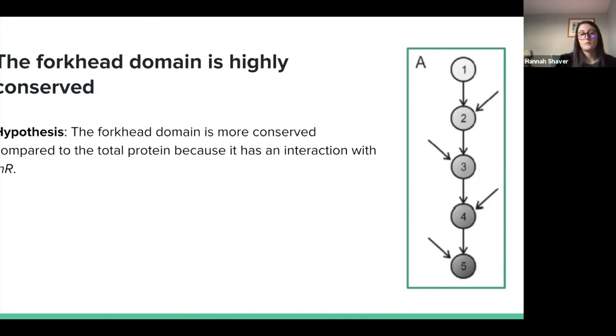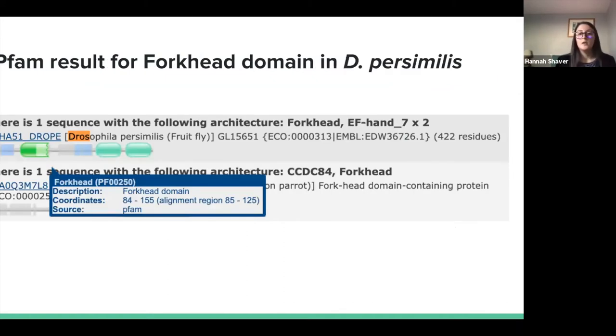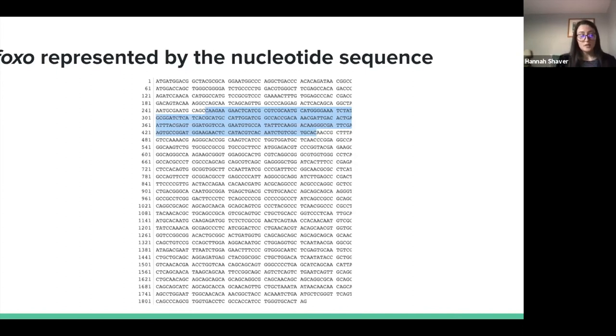Here is an image from Pfam, a bioinformatic tool we use to examine protein structure. We use this analysis tool to determine the specific region within FOXO where the forkhead domain is located. The Drosophila persimilis species has the domain at approximately amino acids 85 to 125. This is the nucleotide sequence of FOXO in which the forkhead domain is highlighted, spanning from 255 to 465.